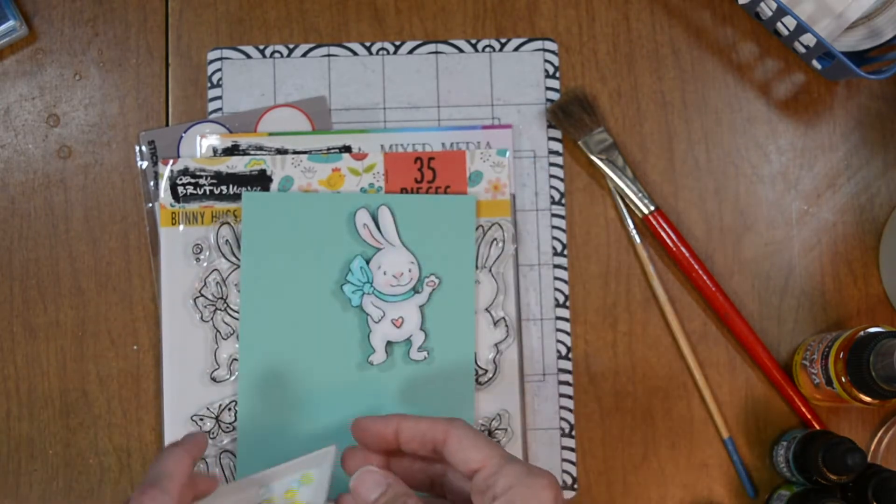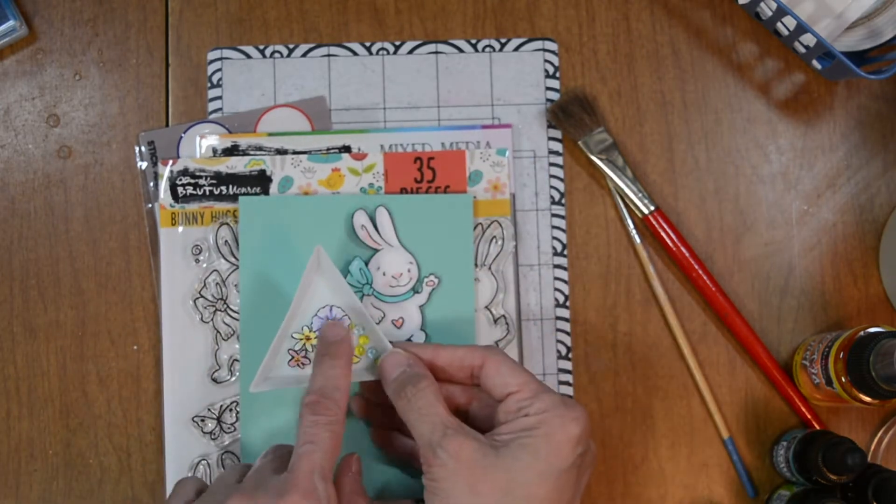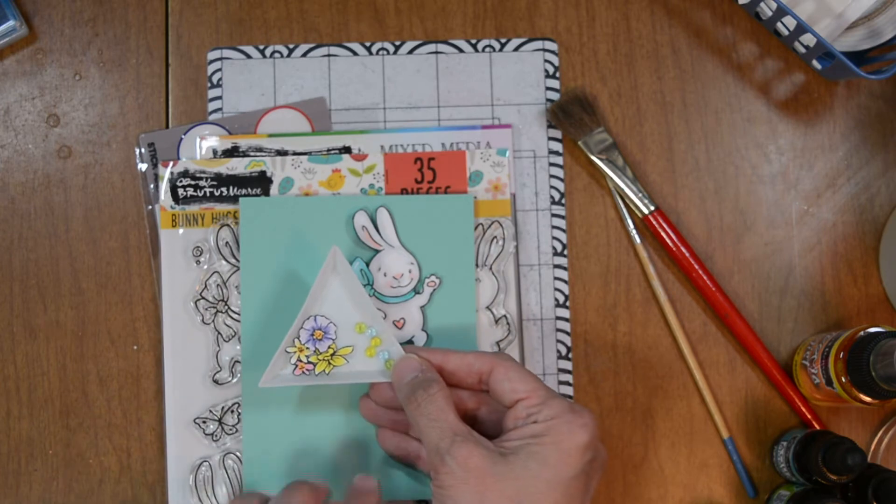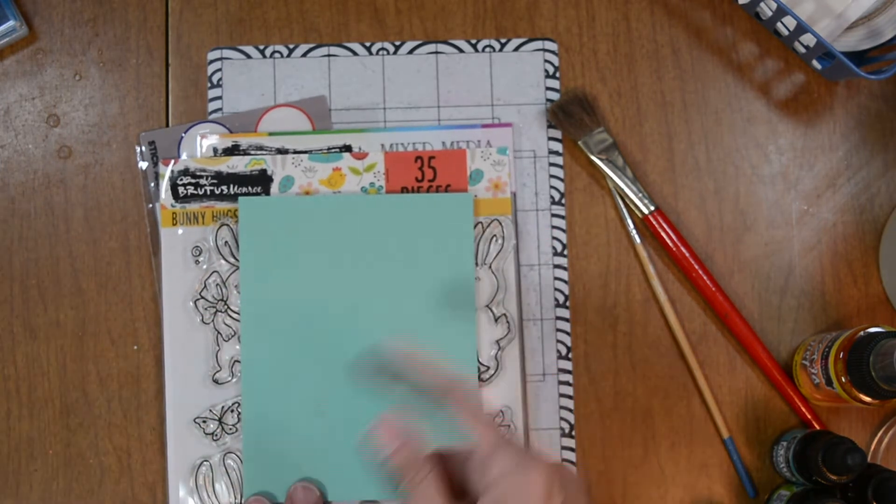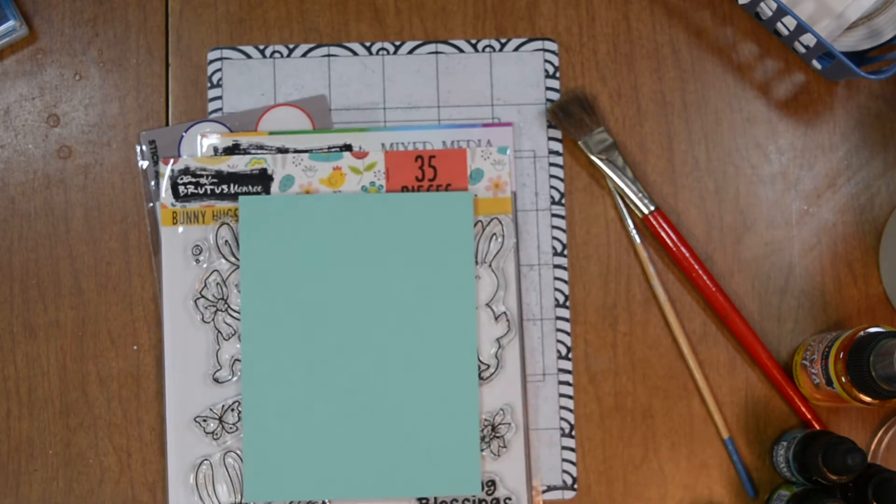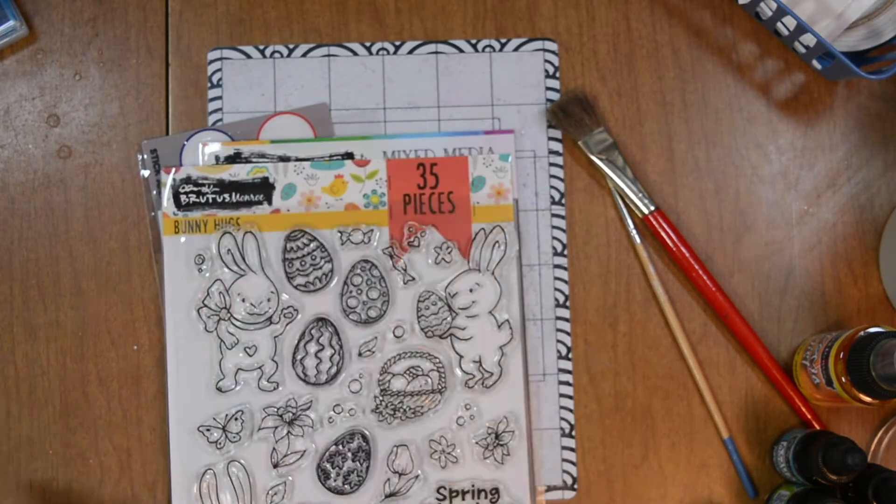I went ahead and stamped and colored all our images and cut them out. We have our bunny, our florals, and I also have some acrylic bubbles for finishing touches. So now let's go ahead and get started.